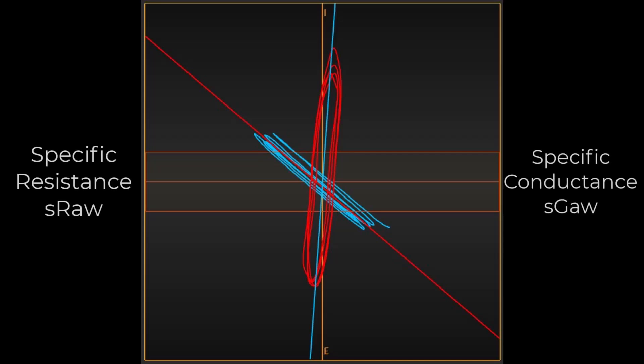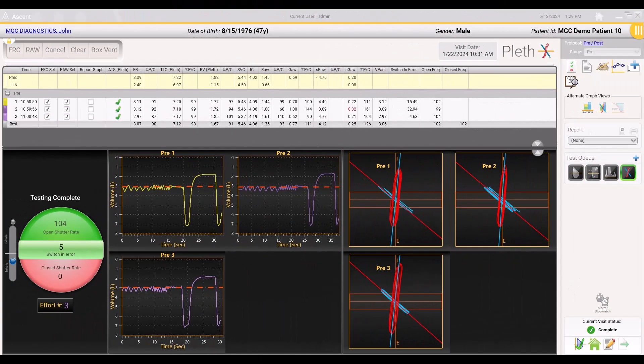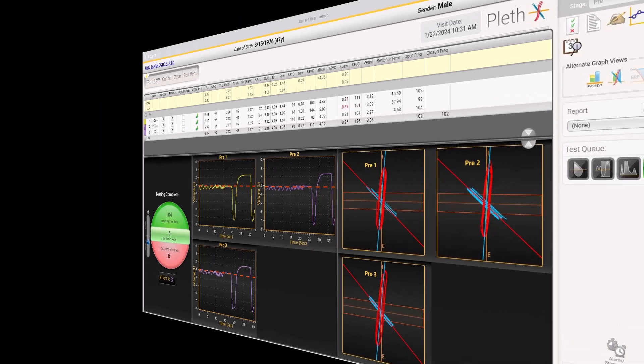Lung volumes are measured with airway resistance in order to calculate the volume of gas in the lungs during open shutter panting, which then allows the software to calculate specific resistance. Draw all of the efforts and look to see if any adjustments to the line of best fit are needed. The line of best fit is the same for the blue or closed shutter tracing as in lung volume testing — the line should use all of the data points and be the same angle or tangent.